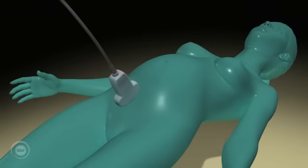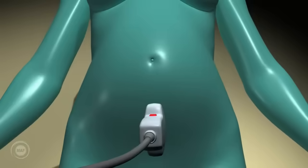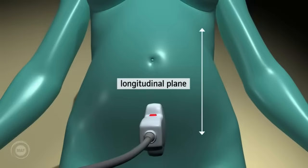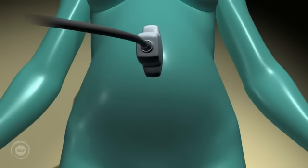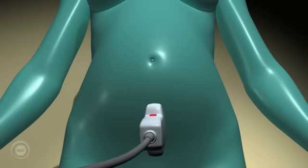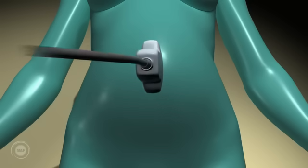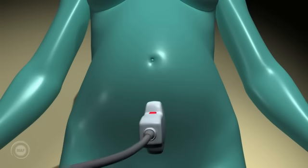Longitudinal. When initiating a scan, one always starts with the probe over the pubic bone of the mother in a longitudinal plane. This means the long axis of the probe is lined up with the long axis of the mother. We then scan systematically up and down her abdomen, taking slices lengthways.